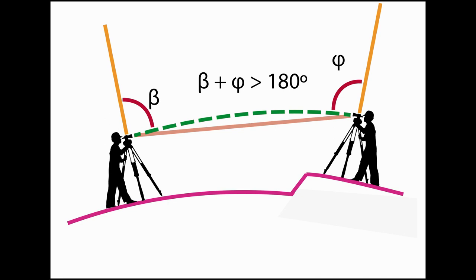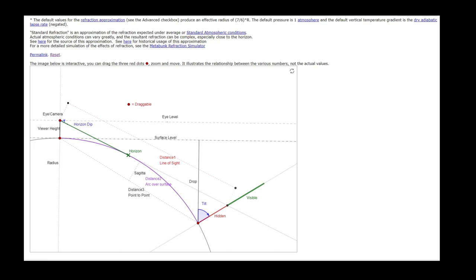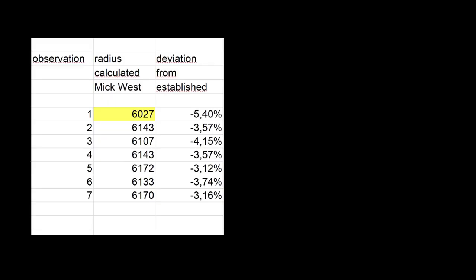So we must take atmospheric conditions into account. The easy way is to apply the 7 over 6 ratio from Mick West's curve calculator. This leads to a calculated earth radius of 6,027, 6,143, 6,107, 6,143, 6,172, 6,133 and 6,170 kilometers respectively. An underestimating of the radius by around 3 to 6 percent.